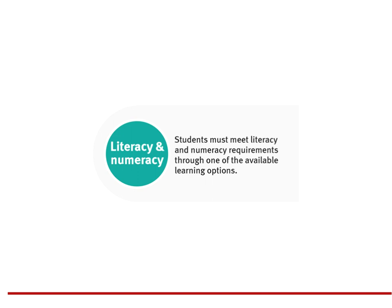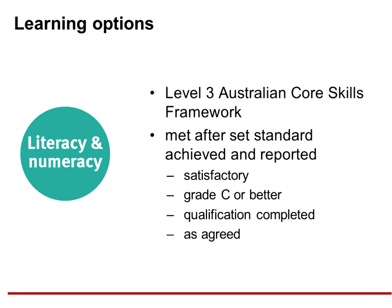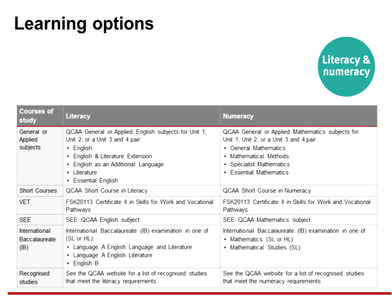The fourth requirement of the QCE is to meet literacy and numeracy standards. The Australian Core Skills Framework provides a consistent national approach to identifying and developing core skills in diverse contexts. Across Australian schooling systems, the ACSF Level 3 is generally accepted as the benchmark for students completing senior secondary schooling. Most Queensland students currently meet this requirement through multiple learning options. The new QCE continues to offer a range of learning options for students to demonstrate literacy and numeracy. These learning options are printed in the QCE and QCIA Policy and Procedures Handbook Draft as well as the fact sheet on the website.